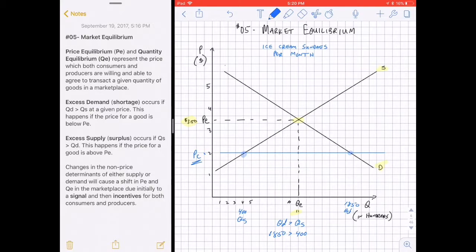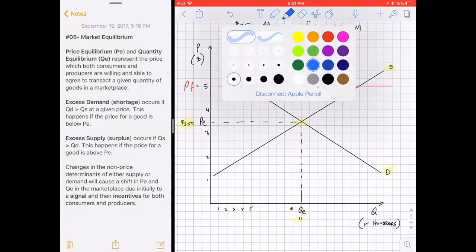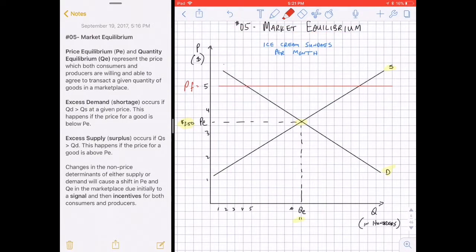Let's take a look what happens when the price is too high. If the price is set in the marketplace too high, let's assume that price is $5. Then you see that at that new price it intersects the quantity demanded, or the demand curve, at a very low quantity value and the supply curve at a very high quantity value. We see quantity demanded in this case of about 450 ice cream sundaes when the price is very high. And quantity supplied is about 1,700 ice cream sundaes supplied at that price.